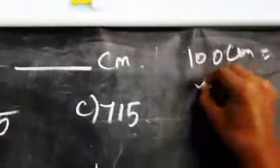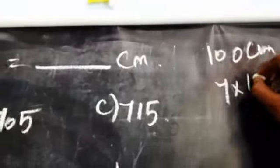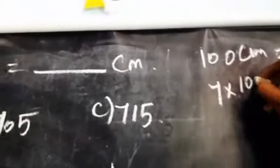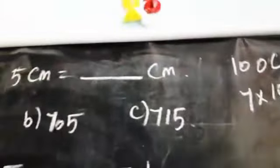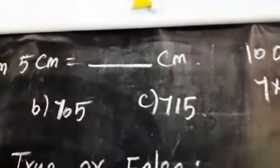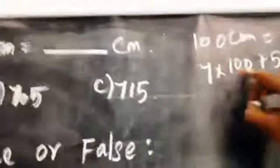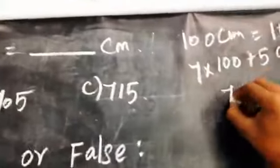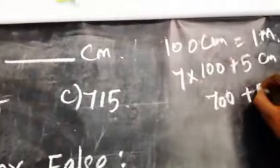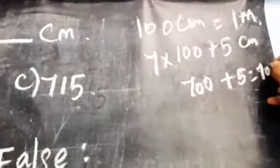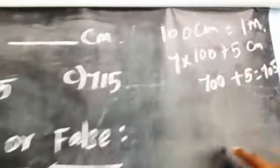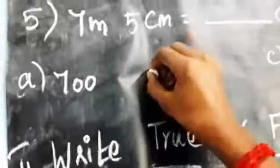One hundred centimeters equals one meter. So for seven meters, multiply seven into one hundred because we are converting into centimeters. Seven into one hundred plus five centimeters: seven hundred plus five equals seven hundred and five centimeters. Therefore the answer is 705 centimeters.